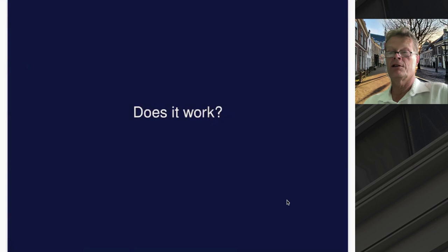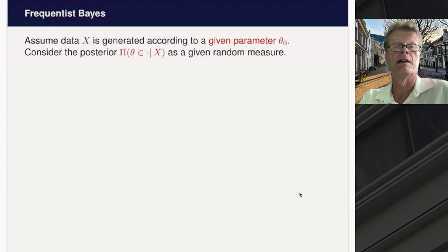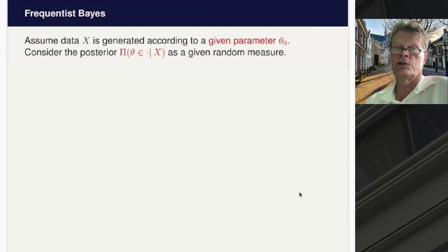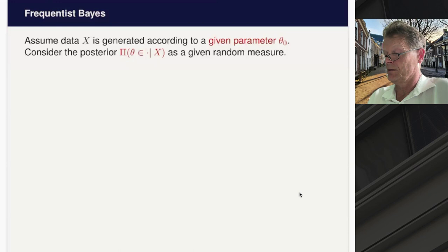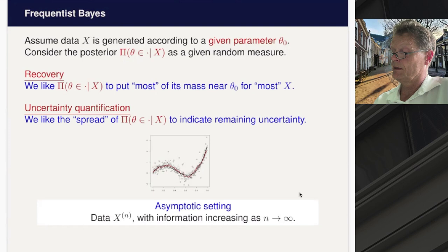Does it work? You cannot answer that question as a complete philosophical Bayesian — you just get your posterior from your prior and that's it. But as a pragmatic Bayesian you can do something called frequentist Bayes: assume the data is actually generated from a true parameter theta_0, and look whether the posterior can find that parameter from the data. We consider the posterior as a random measure over the parameter set and want two properties: concentration near theta_0, and meaningful uncertainty quantification.